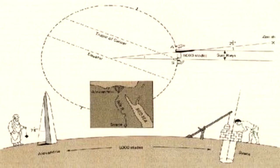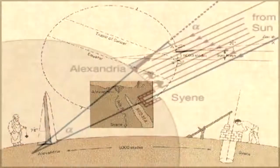The story goes that around 250 BC, a Greek mathematician and philosopher named Eratosthenes noted that at noon during the summer solstice in Sien, the sun cast no shadow and the rays could reach straight to the bottom of his well, yet meanwhile in Alexandria a vertically standing metal rod cast a significant shadow.